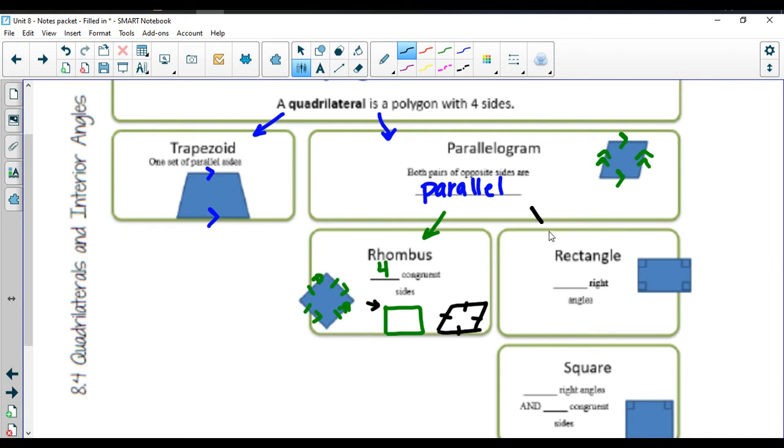If you're a parallelogram, you are a special parallelogram, you're a rectangle, if you have four right angles. So in addition to those four right angles, you also still have the two sets of parallel sides for rectangles.